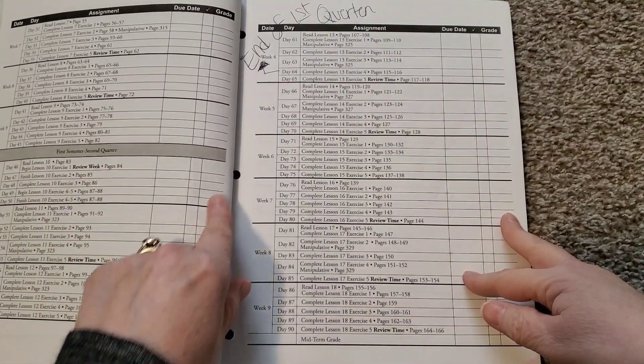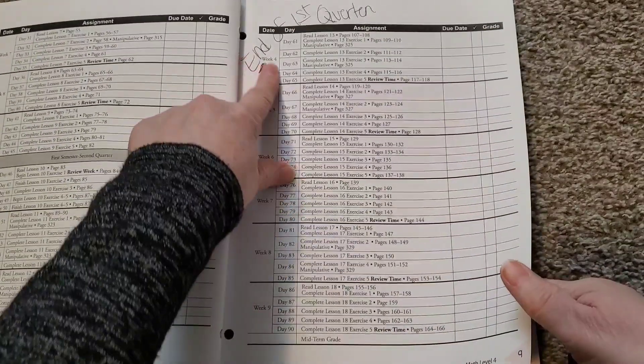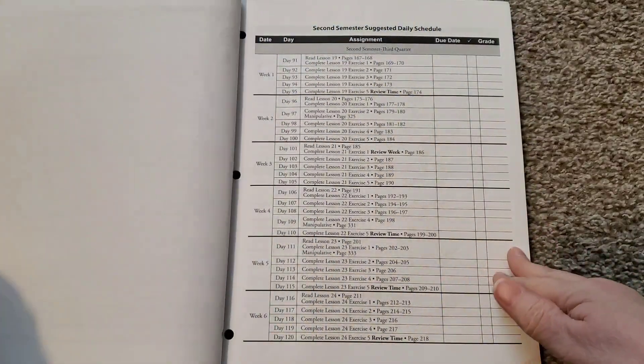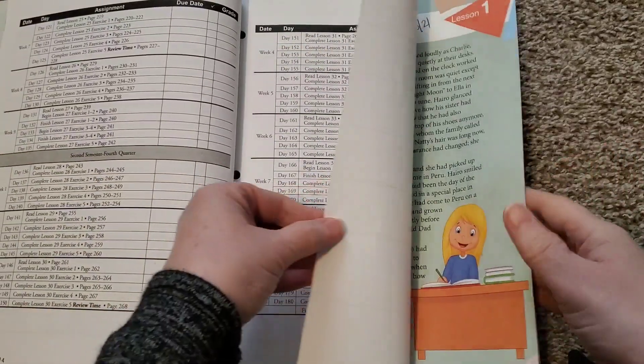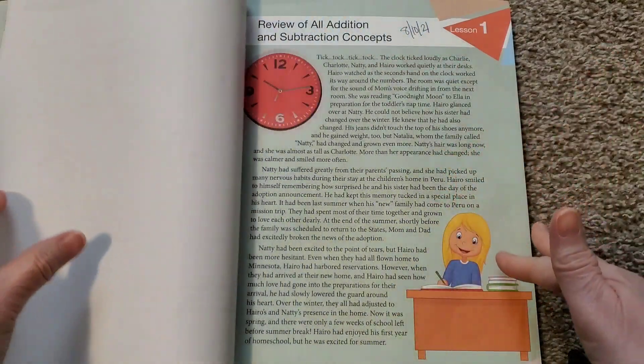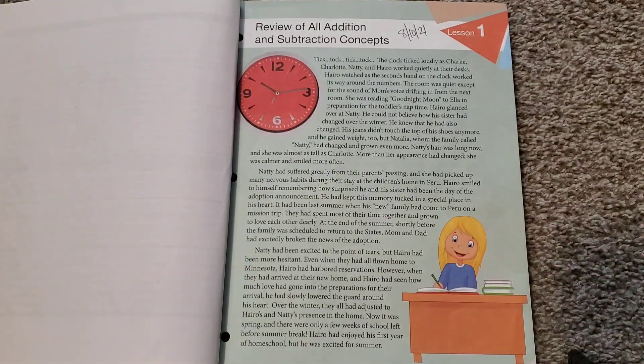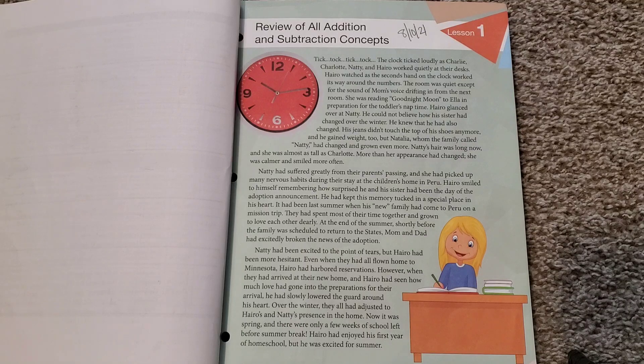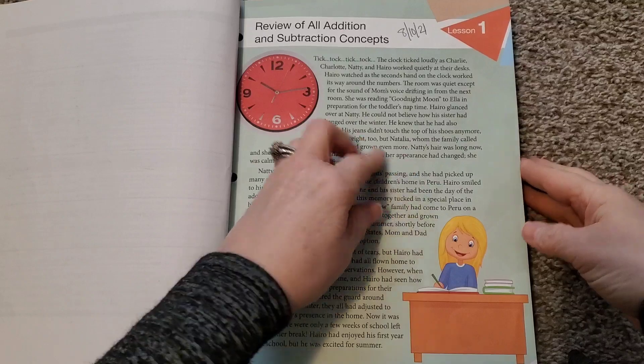But as you can see, yeah. So the only thing I have done is I kind of put in there, okay, I ended the first quarter. So it gives you all of this area. So if you're that kind of person that really likes the schedule to tell you what to do next, then this is perfect. So then it starts out with a review of all addition and subtraction concepts. And I like that it does that, that this curriculum goes back and it reviews the previous year, which is wonderful.